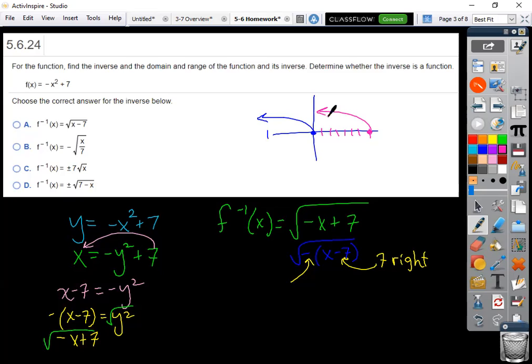Find the function, find the inverse and the domain. Okay, the domain range of the function, the original function right here would be 7 to the right, going like that.